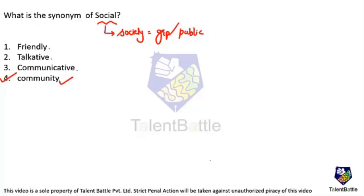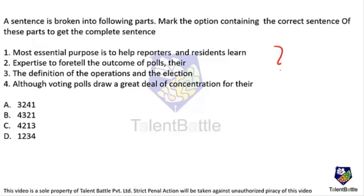The next question involves para jumbles — arranging four sentences in a meaningful order. Pause the video and try to answer on your own. Looking for links between sentences: one sentence mentions 'most essential purpose is to help reporters and residents learn.' The question is — learn what? The link is 'learn the definition of the operations and the election,' connecting sentences one and three.